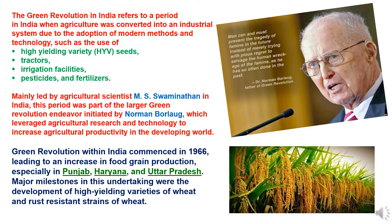Under the premiership of Congress leader Indira Gandhi, the Green Revolution within India commenced in 1966, leading to an increase in food grain production, especially in Punjab, Haryana, and Uttar Pradesh. Major milestones in this undertaking were the development of high yielding varieties of wheat and rust-resistant strains of wheat.